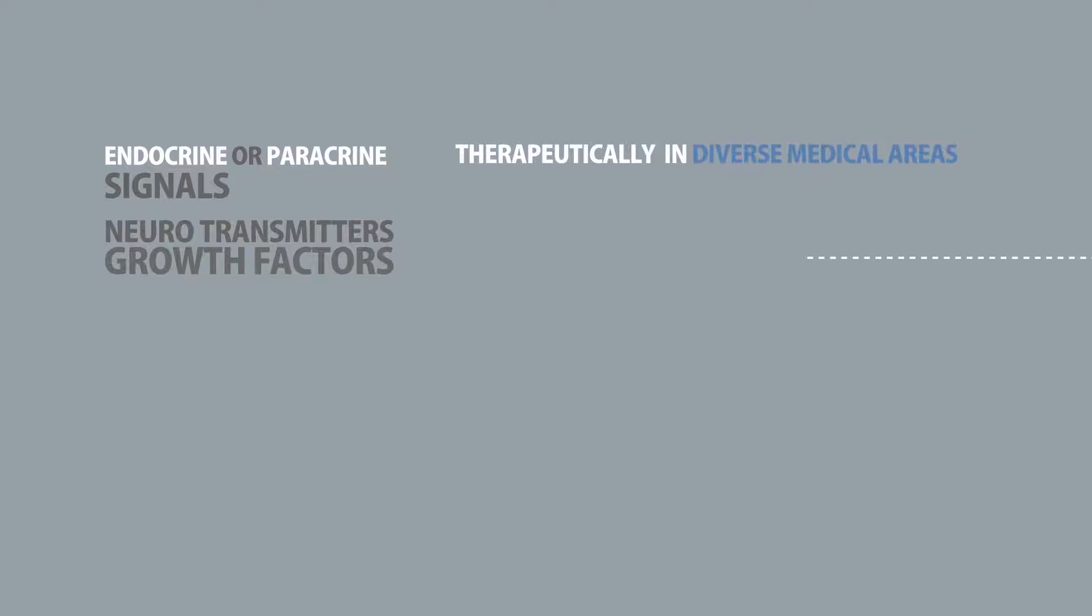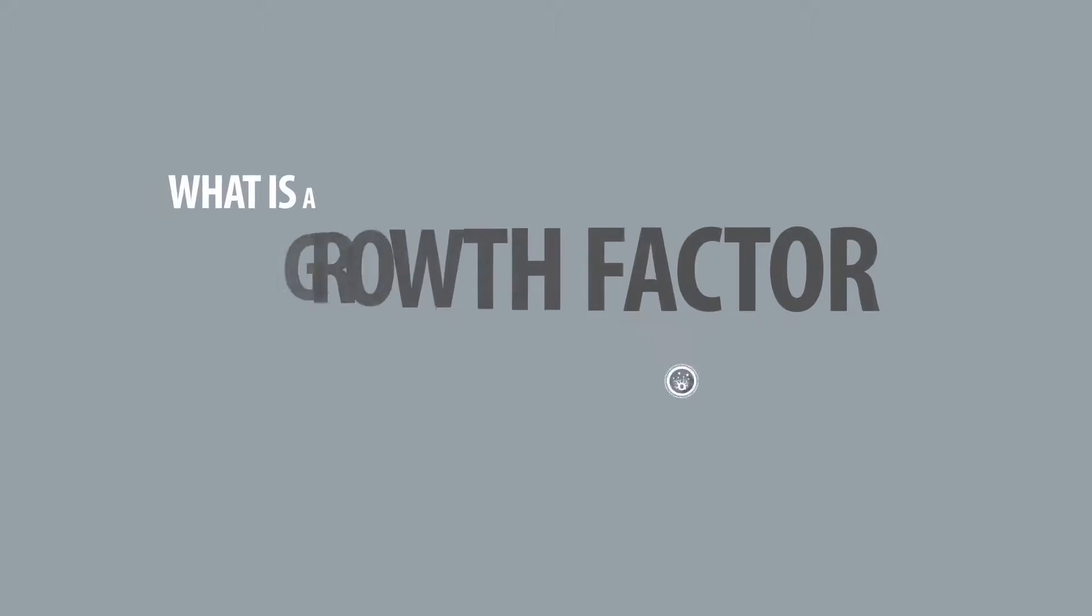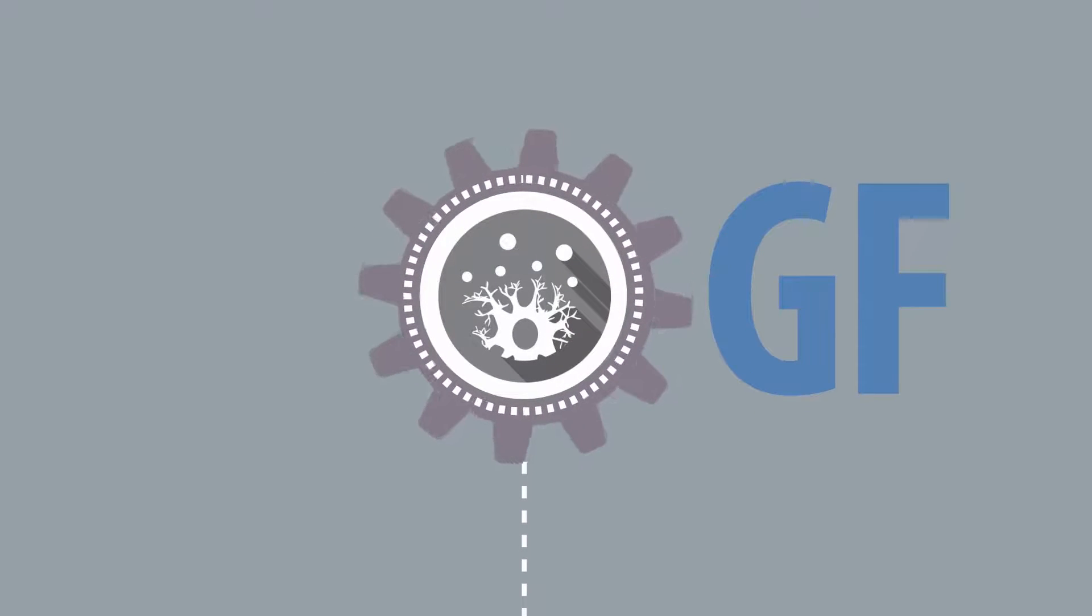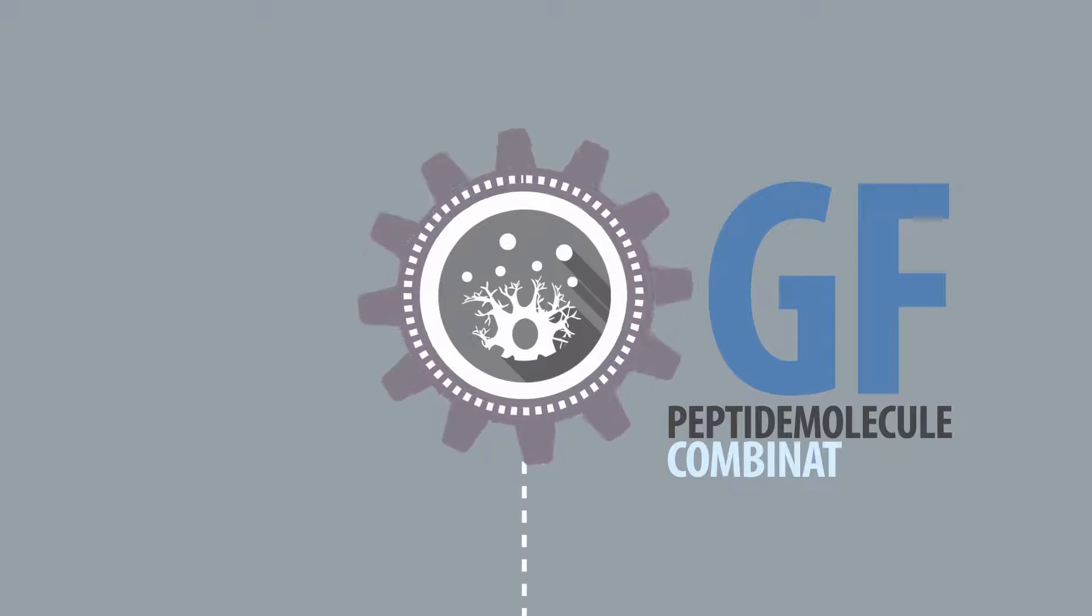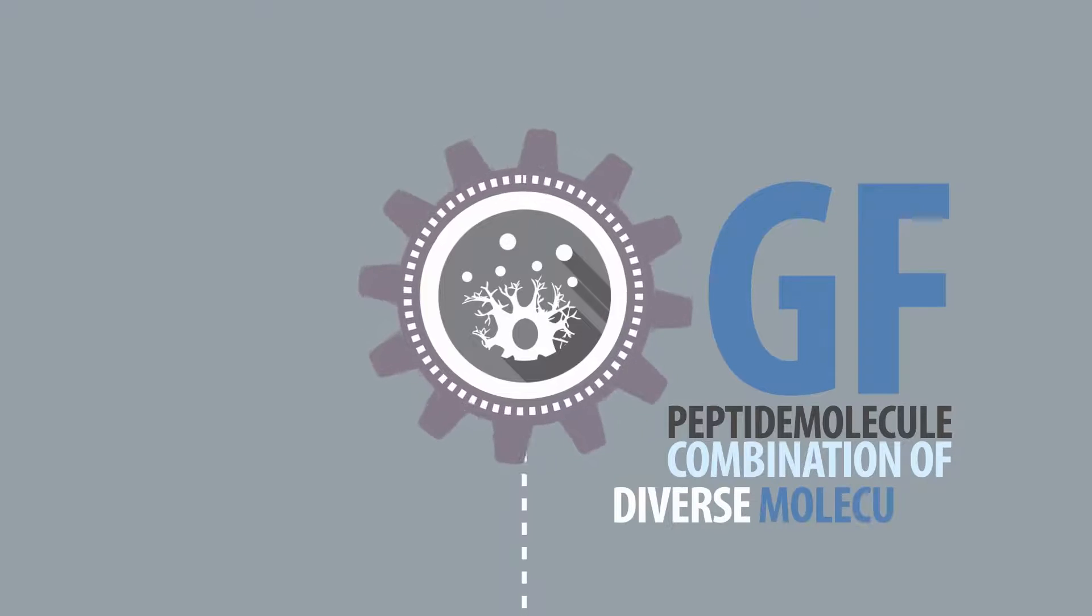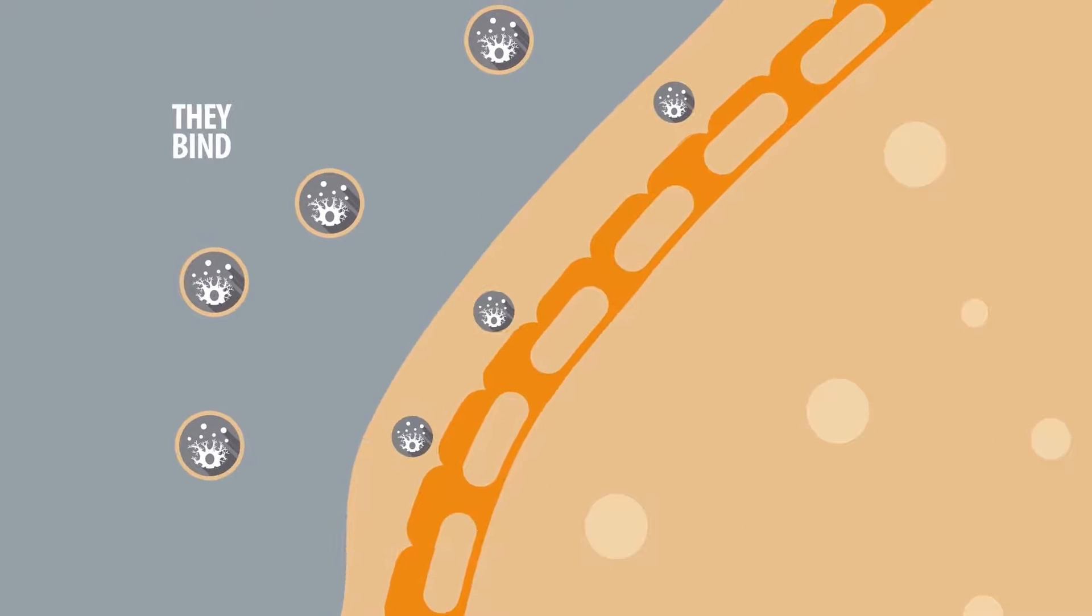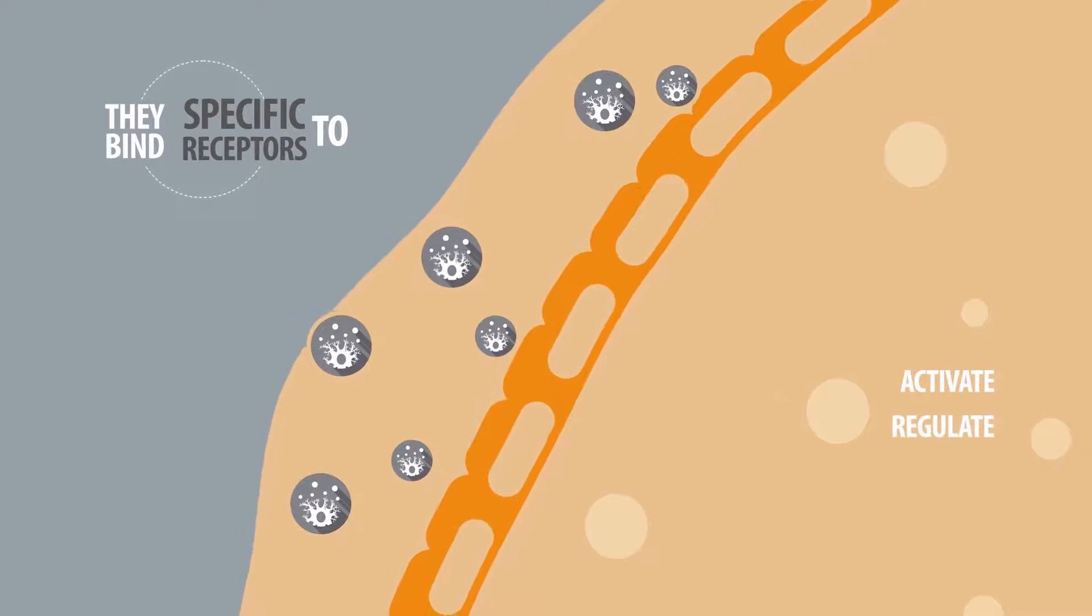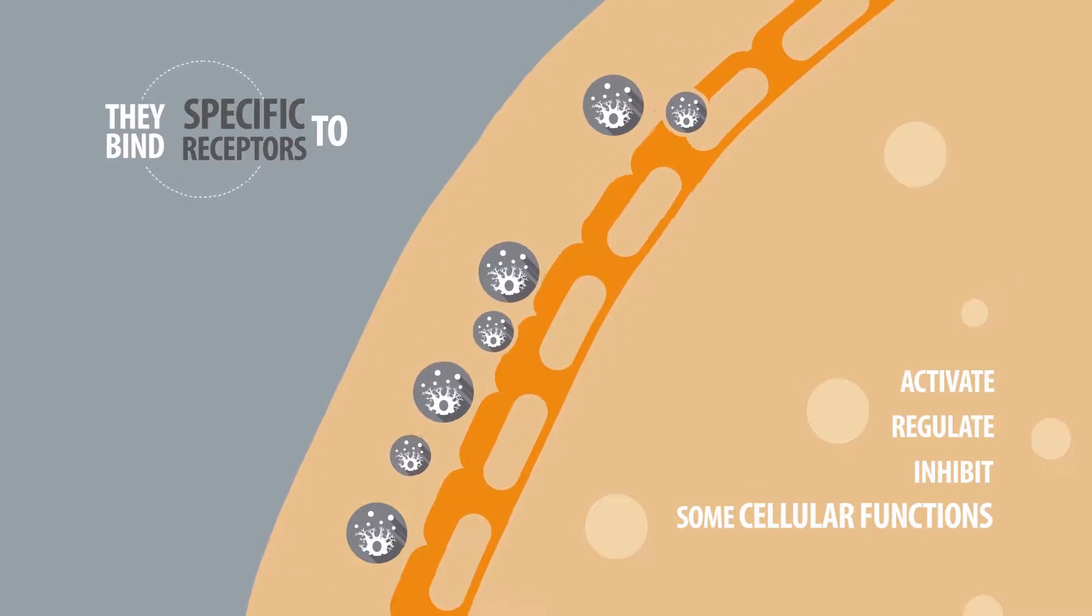What is a growth factor (GF)? By definition, a growth factor is a peptide molecule or a combination of diverse molecules such as glucose or lipids. They combine to specific receptors on the cell surface in order to activate, regulate, or inhibit some cellular function or functions. As a result, the GFs are biologically active at cellular levels.